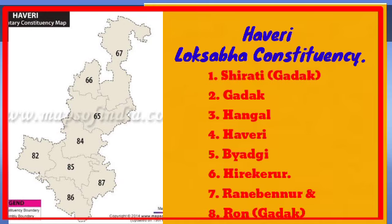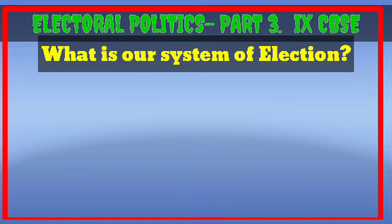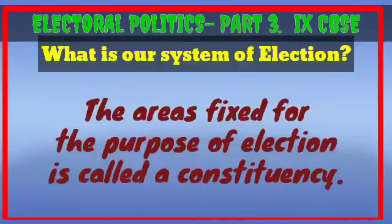Those eight assembly constituencies include Shirhatti, Gadag, Hanagal, Haveri, Byadagi, Hirekerur, Ranebennur, and Ron. The same principle is applied for panchayat elections as well as municipality elections. Each village or town is divided into several wards — like small constituencies — and each ward member is selected from each small constituency. This is also known as seats.